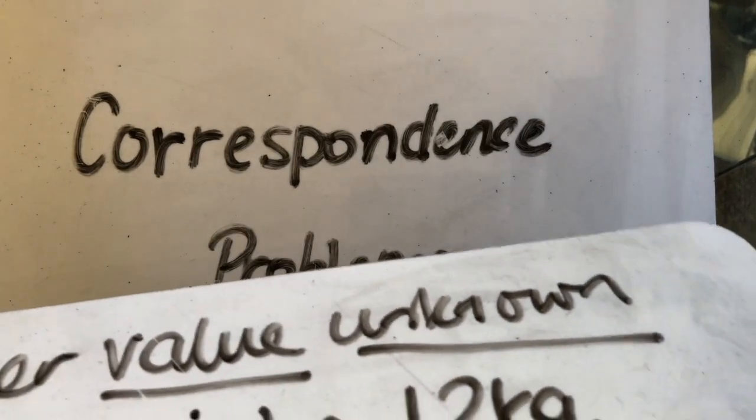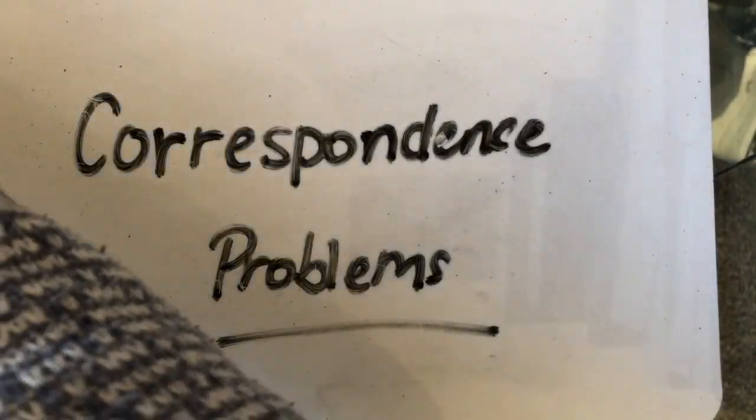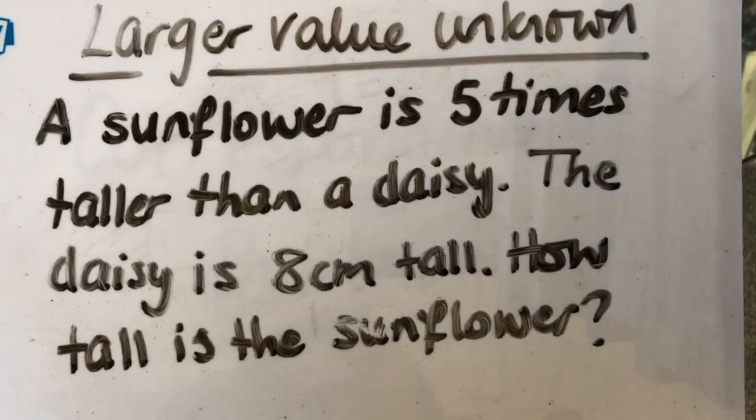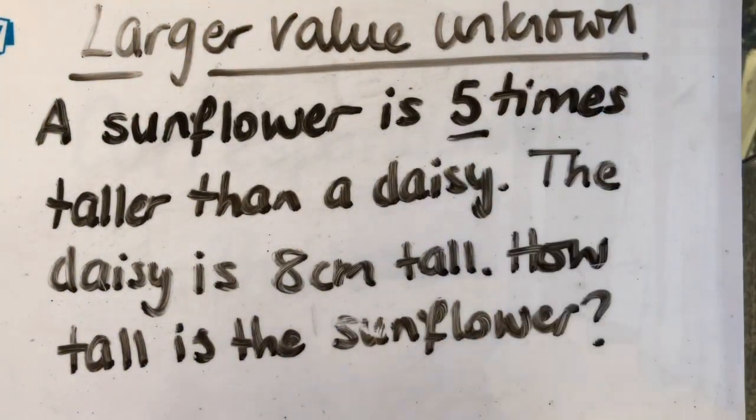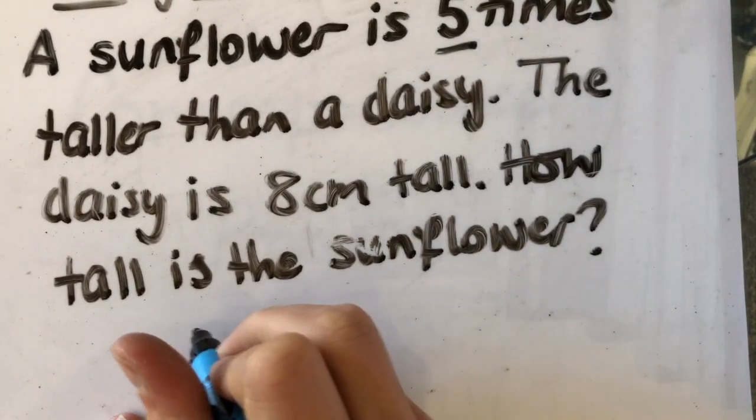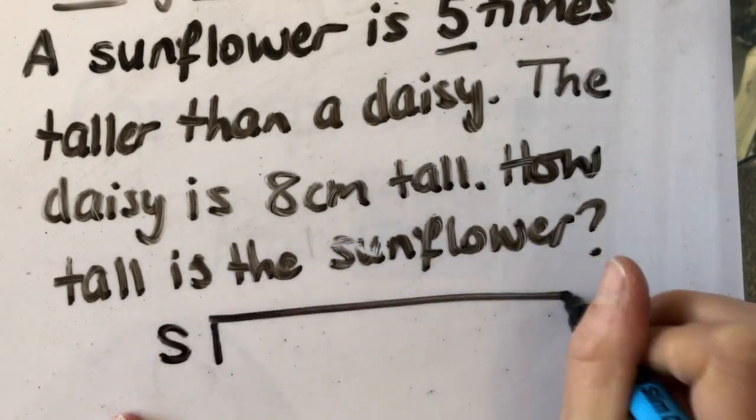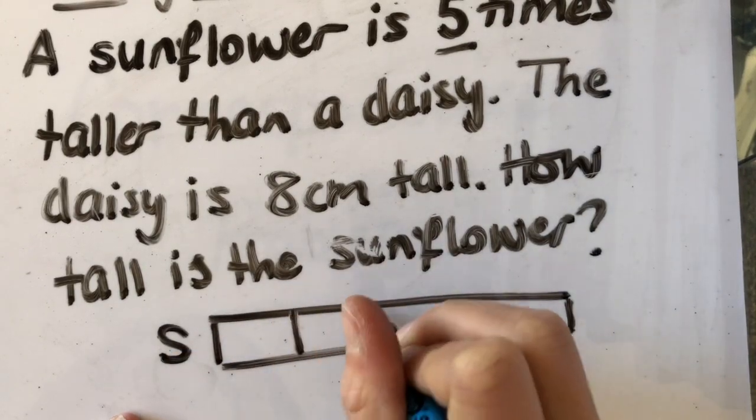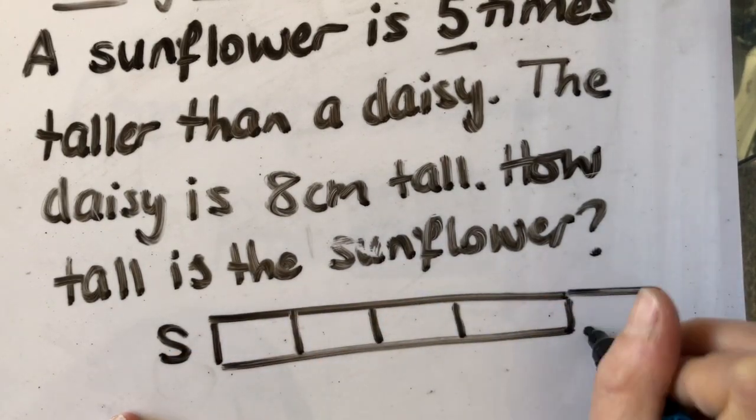Moving on to the next problem. The next one I'm going to look at is when the larger number is unknown. So look here, a sunflower is 5 times taller than a daisy. So 5 times taller. So my bar model, look at my sunflower, it's 5 times 1, 2, 3, 4, 5.